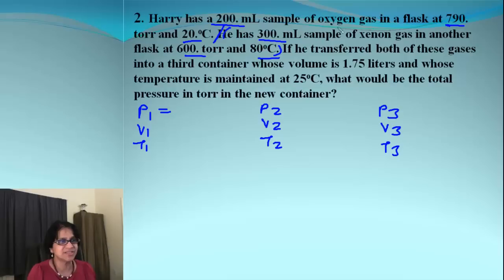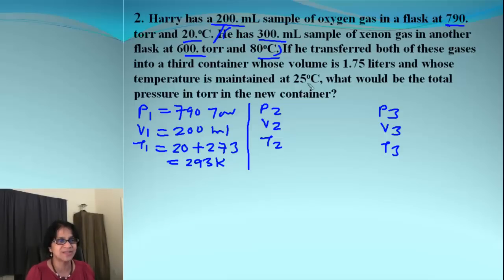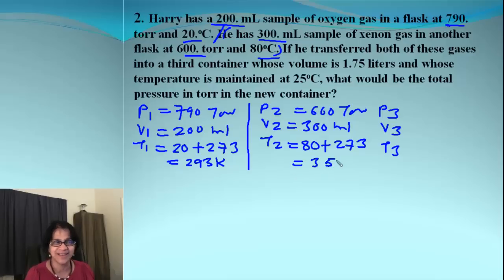So, what's the first pressure? It is 790 torr. Then, what is the first volume given? That is 200 milliliters. And, temperature is 20 degrees Celsius. So, we convert that to Kelvin. And, that becomes 293 Kelvin. Okay. Let's do second one. Second gas has 300 milliliters as volume. And, then, pressure is 600. And, the temperature is 80 degrees. So, it's 80 plus 273, which is 353 Kelvin.